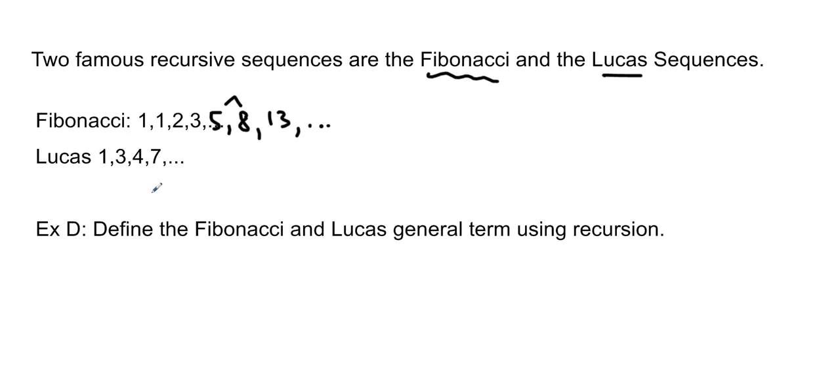And the Lucas sequence works in exactly the same way. So 1 and 3 are defined, and then you just add them together to get 4. 3 plus 4 is 7. 4 plus 7, 11. 7 plus 11, 18. 11 plus 18, 29. And you get the picture.